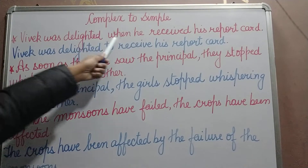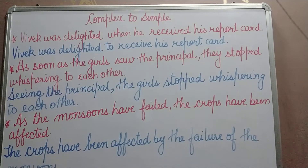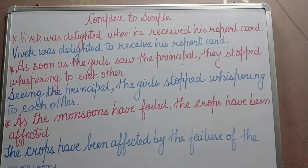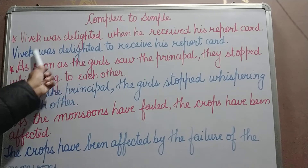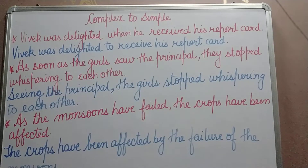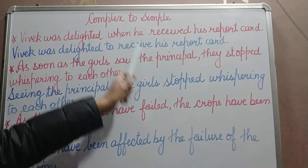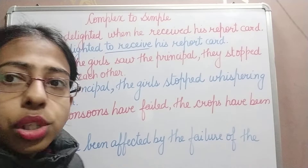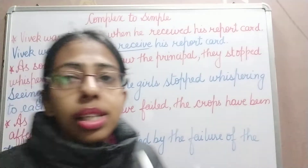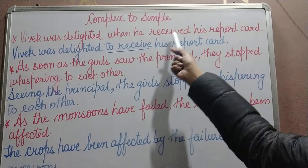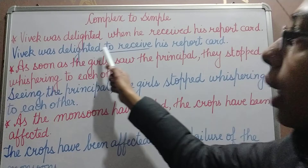'Vivek was delighted when he received his report card' is a complex sentence — joined by 'when'. Change it: 'Vivek was delighted to receive his report card.' The dependent clause 'when he received his report card' is changed to the phrase 'to receive his report card.' 'Receive' is not a verb here — 'to receive' is an infinitive, which is a verbal, not a verb. The dependent clause has been changed to a phrase.